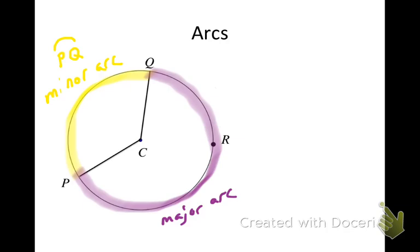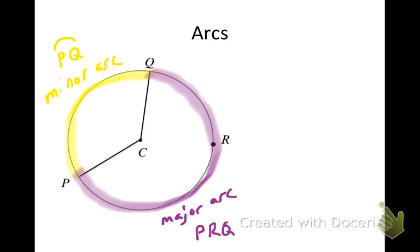I could also call this major arc PQ, since you name an arc with its endpoints. However, this arc PQ is not the same as the purple arc. So even though they have the same endpoints, we need to name them differently. Whenever you have a major arc or a semicircle, you still name the arc using its endpoints, but you also include the name of any point that's between those two endpoints along the arc — in this case, point R. So I could call that major arc by the name arc PRQ, meaning it begins at P, ends at Q, and goes through point R.